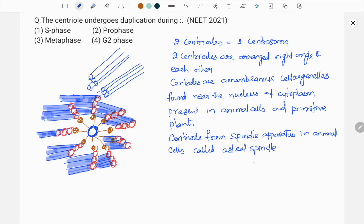Those spindle apparatus are formed from centrioles in animal cells called as astral spindle. Whereas in plants, the spindle apparatus are not formed from the centrioles, so they are called as anastral or amphiastral.